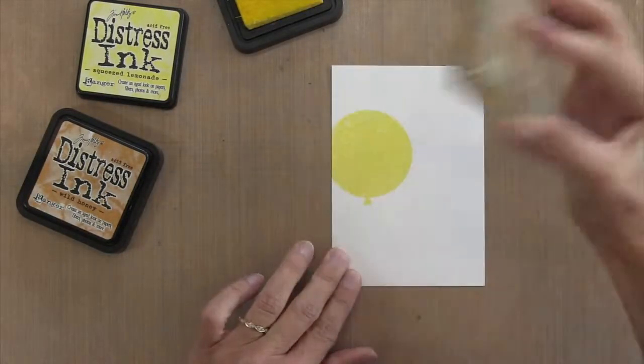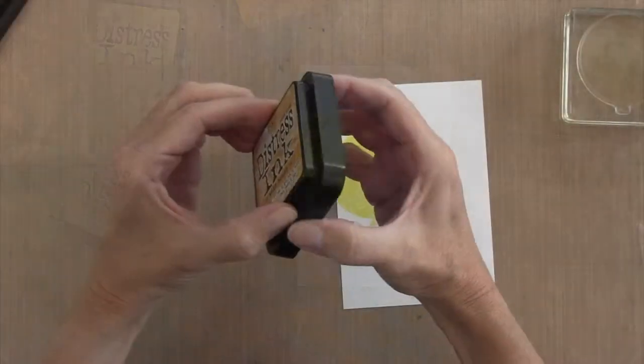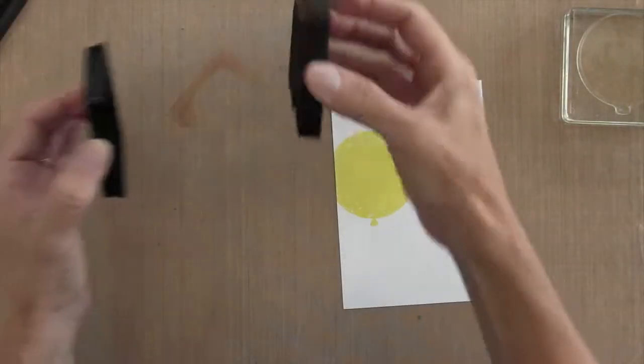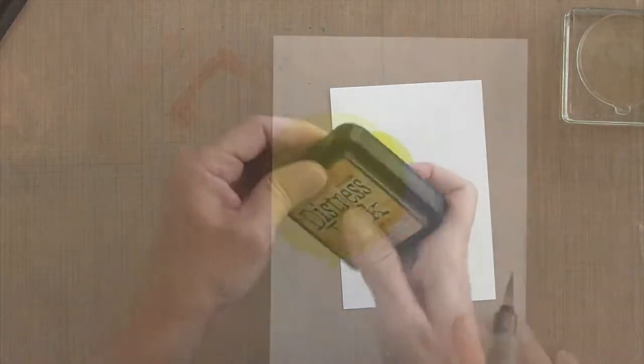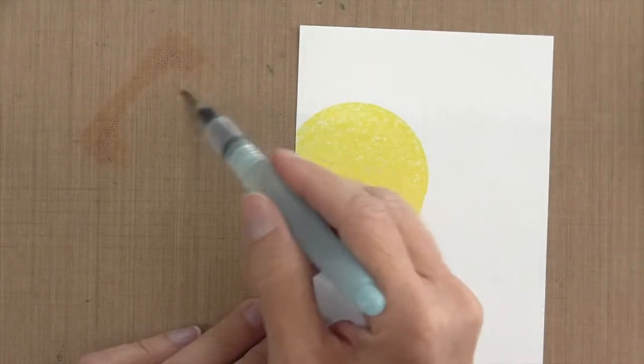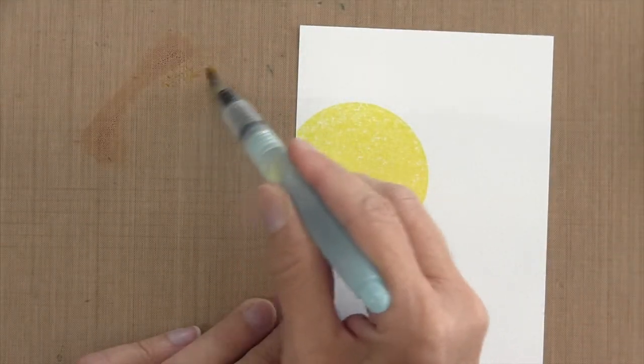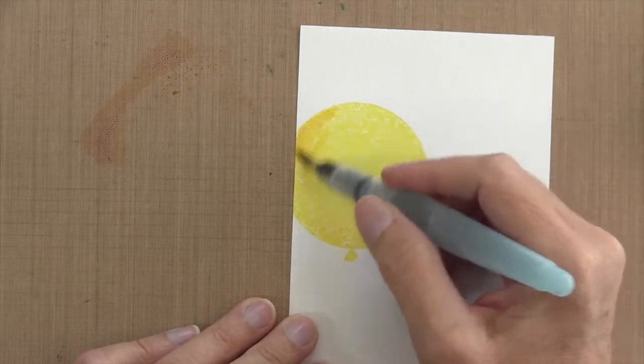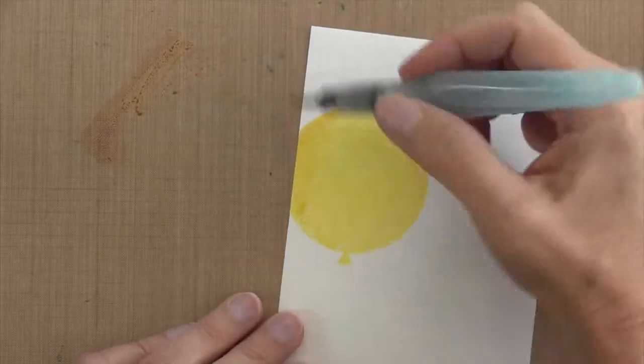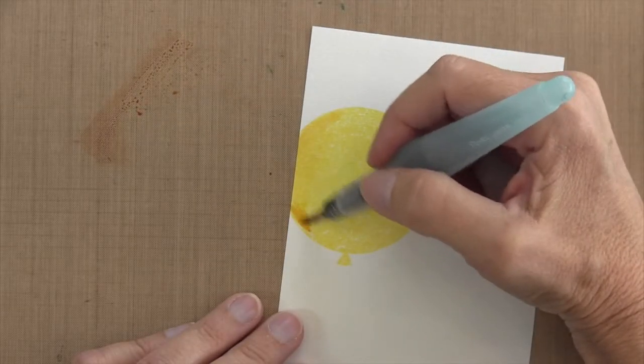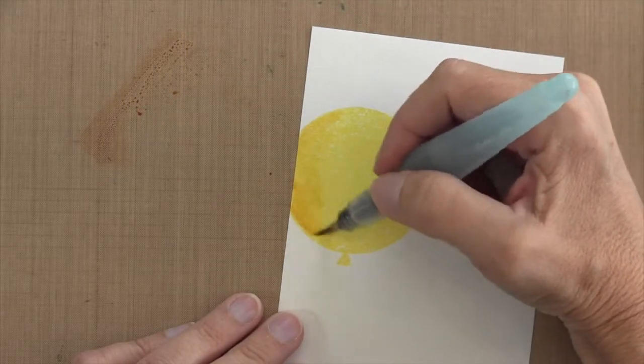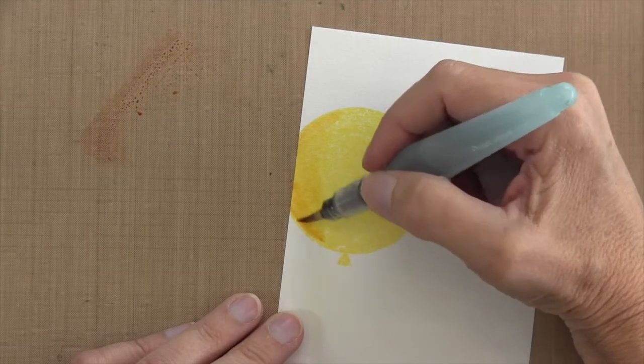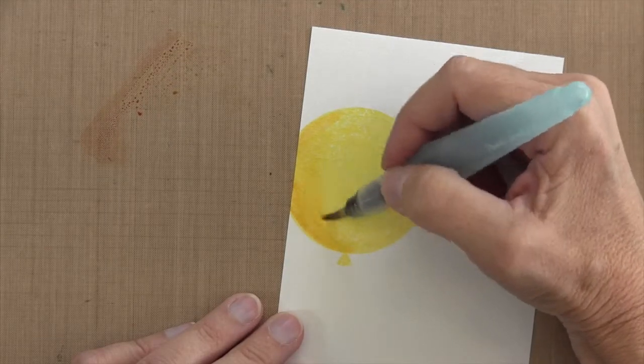Then I'm going to take my wild honey, put a little bit on my craft mat, and take my aqua painter to start highlighting. I'm going to start with just a little bit because you can always add more. I'm going to highlight the sides, like the edges of the balloon, and move my way towards the middle. I especially want to create a little bit more of a dark shadow underneath, kind of on the bottom part of the balloon.